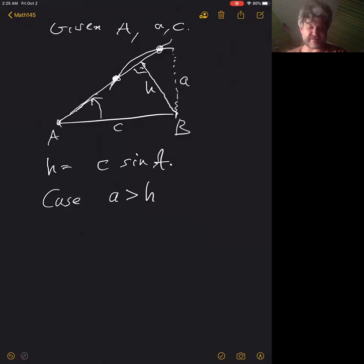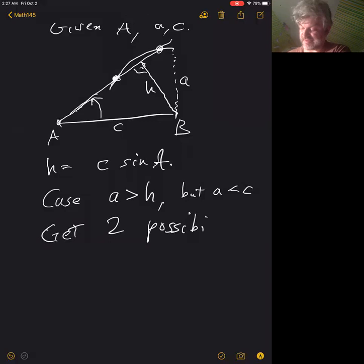Okay, but we cannot do this if a is actually bigger than c. So this applies only in the case where the given side a is between h and c - we get two possibilities. And we'll do an example for how we calculate this stuff with the law of sines in lecture.